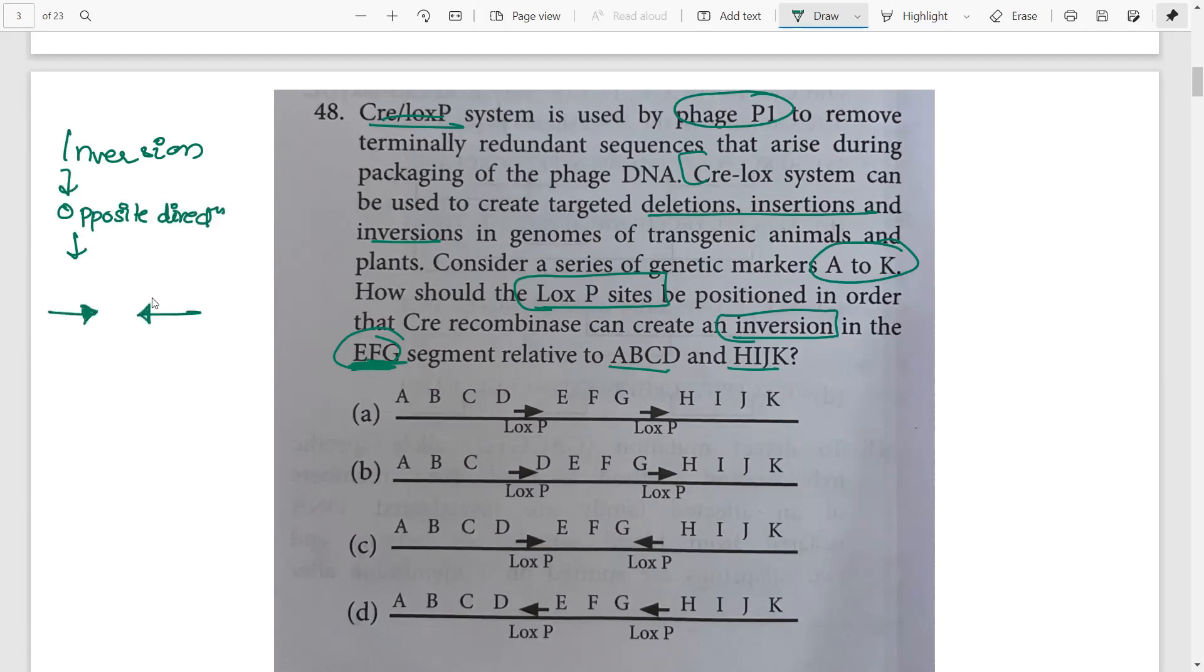Where should the thing to be inverted be placed? EFG has to be inverted, so it should be placed between the LOXP sites. It cannot be A or B because in both cases the arrows are in the same orientation. The only option left is option C. How much time did it take? Nearly seconds, and you get four marks for this.